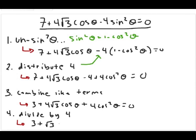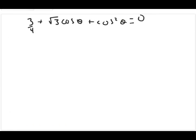Last, we should divide both sides by 4, and when we do, we would get 3/4 + √3 cos θ + cos²θ = 0.